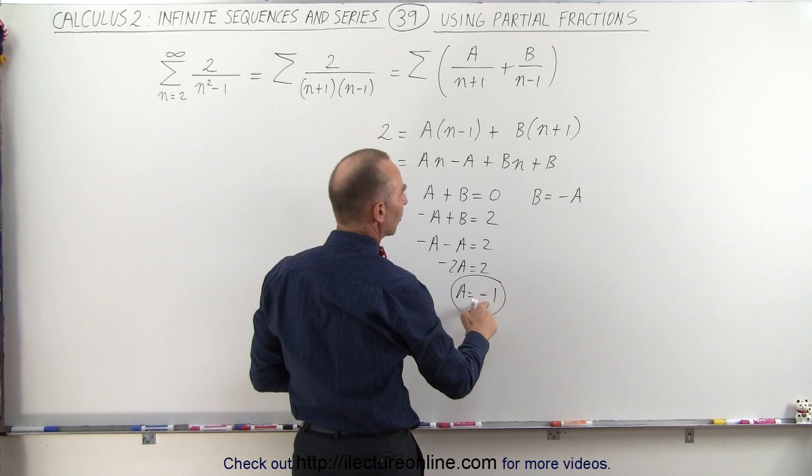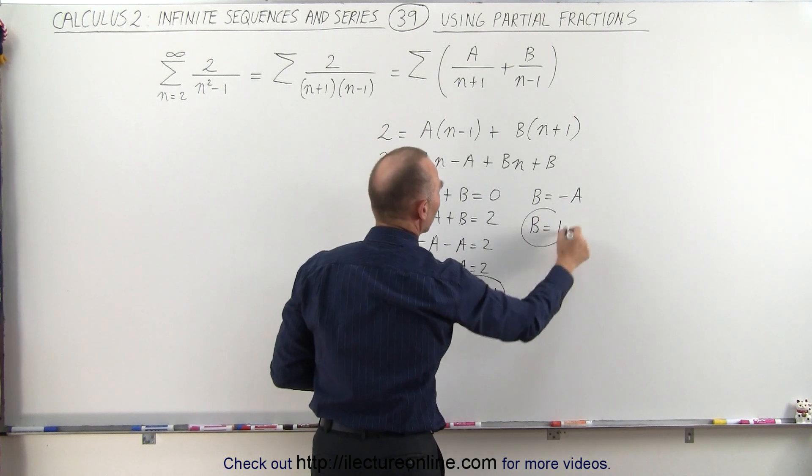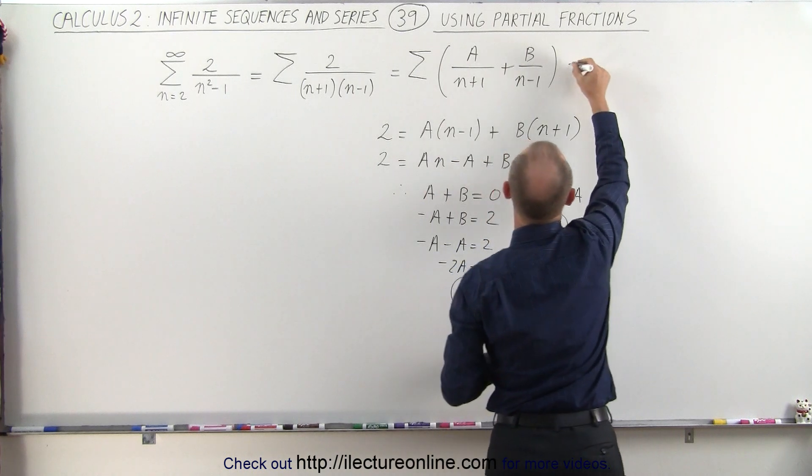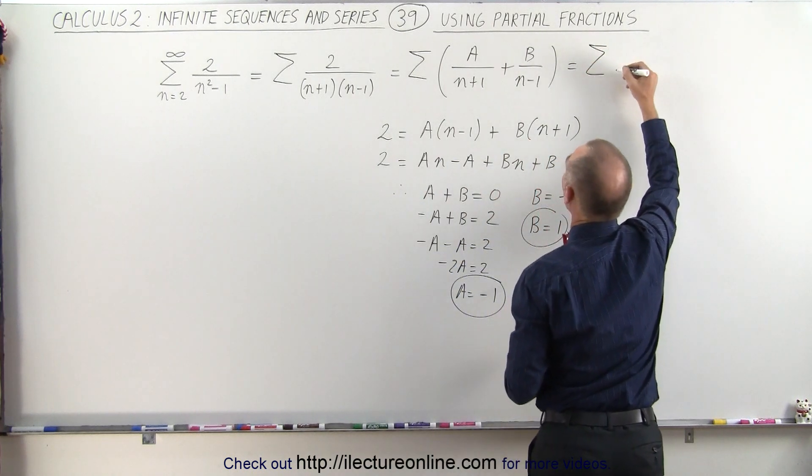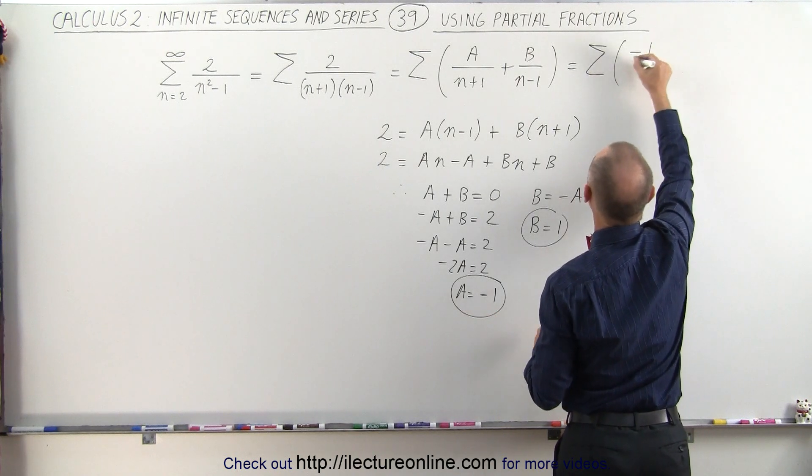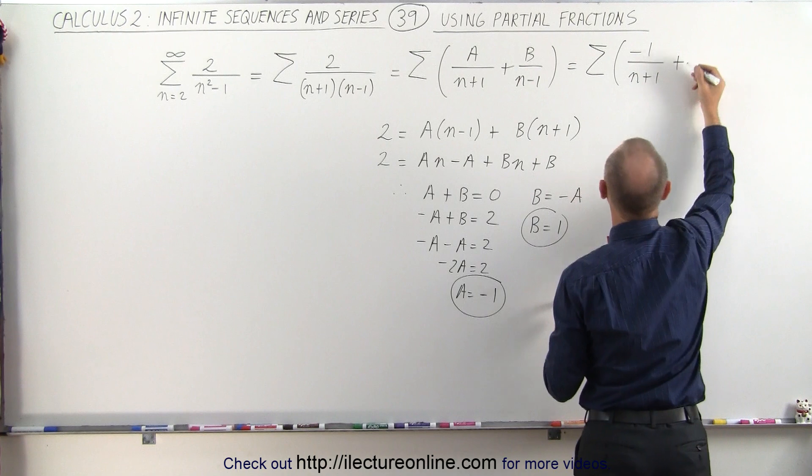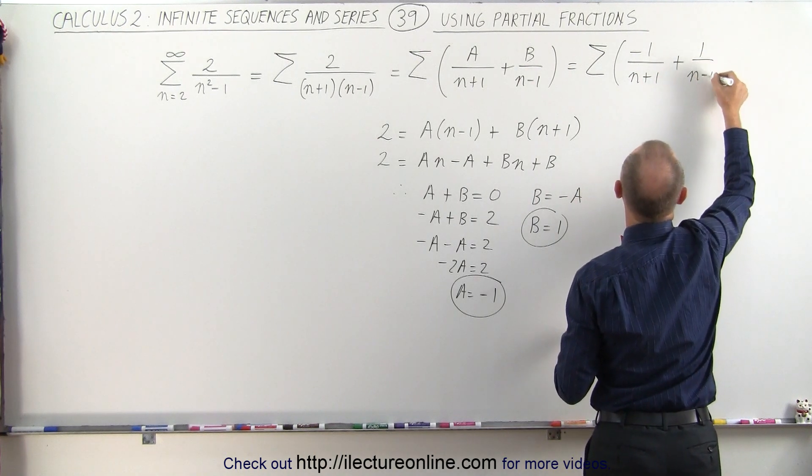So, if a is equal to minus 1 and b is negative a, that means that b is equal to 1, which means that this can now be written as the infinite sum of a, which is minus 1, minus 1 over n plus 1, plus b, which is 1 over n minus 1.